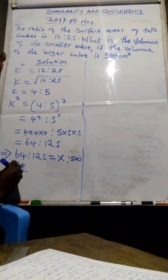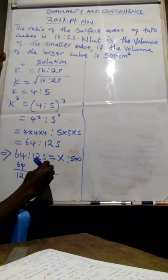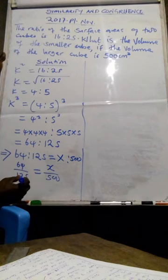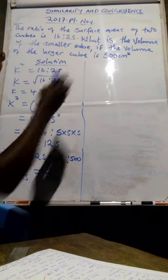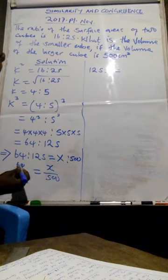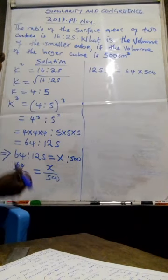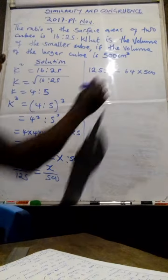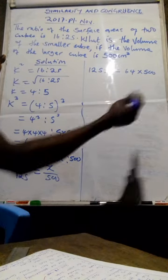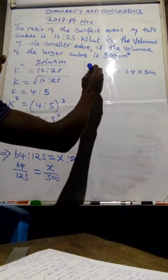You say 64 over 125, you have not changed any meaning, is equal to x over 500. From there now you cross multiplication, so this will be x times 125, which will be 125x is equal to 64 times 500. Remember this is paper 1, you are not allowed to use a calculator. Don't multiply these numbers, they will give you a big number, it will take time for you in order to find the answer there. So what you do, just ignore it, leave it the way it is, divide both sides by 125.